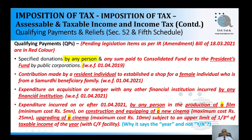The next qualifying payment is expenditure on acquisition or merger with another financial institution, incurred by any financial institution. The government wants to promote the amalgamation of financial institutions to build up the strength of these entities. With effect from 1st April 2021, such expenditure is a qualifying payment.